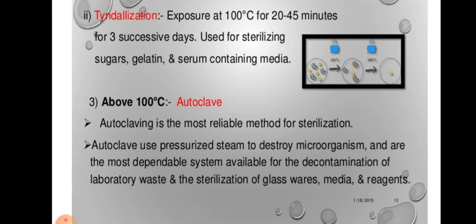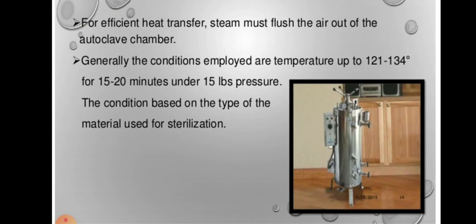Above 100 degrees centigrade is obtained by an instrument known as autoclave. It is the most reliable method of sterilization. Autoclave uses pressurized steam to destroy microorganisms and is the most dependable system available for the decontamination of laboratory waste and the sterilization of glassware, media and reagents. For effective heat transfer, steam must flush the air out of the autoclave chamber. Generally, the conditions employed are temperatures of 121 to 134 degrees centigrade for 15 to 20 minutes under 15 LBS pressure. The conditions depend on the type of material used for sterilization.